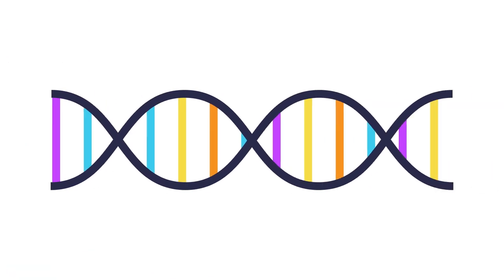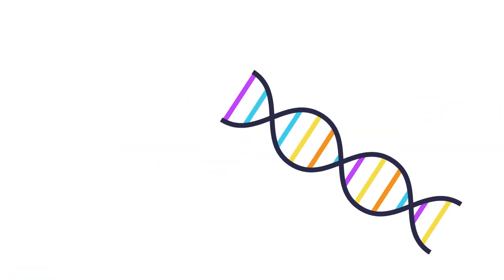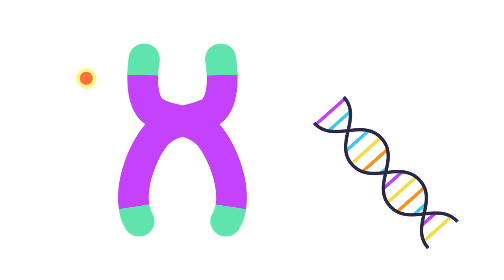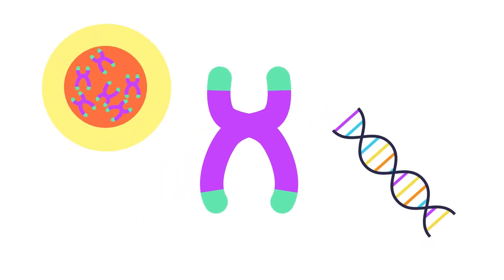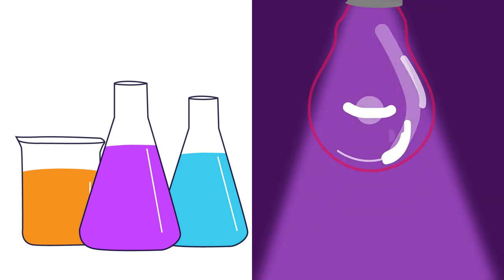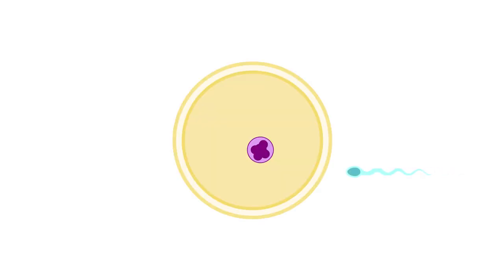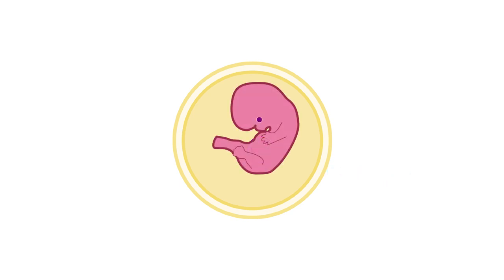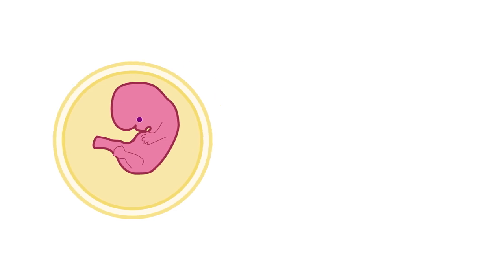Down's syndrome is caused by a change in the DNA. Any change in the structure or the amount of DNA of an organism is called a mutation. Mutations are caused by mutagenic agents like some chemicals or ultraviolet light, for example. If a mutation happens in a somatic or body cell, only this cell and its daughter cells will be affected. If a mutation happens in a sex cell or gamete and fertilization happens, then all of the cells of the embryo, fetus, and baby will carry this mutation. This is what happens in Down's syndrome.